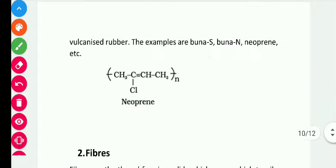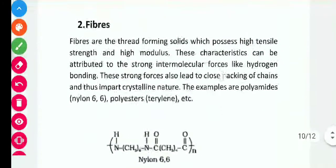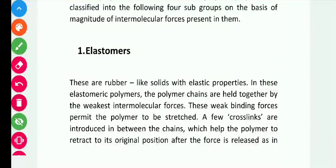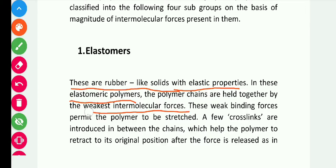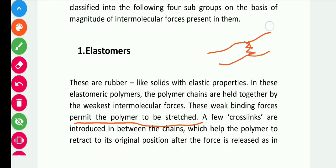Based on molecular forces, polymers are classified into four subgroups: elastomers, fibers, thermoplastic polymers, and thermosetting polymers. Elastomers are rubber-like solids with elastic properties. In elastomeric polymers, the polymer chains are held together by the weakest intermolecular forces, like van der Waals forces, and they don't contain hydrogen bonds. Because of this weak intermolecular force, the polymer can be easily stretched.